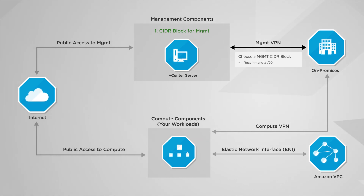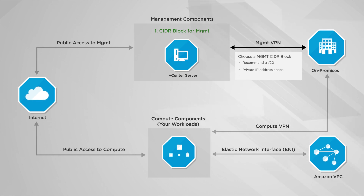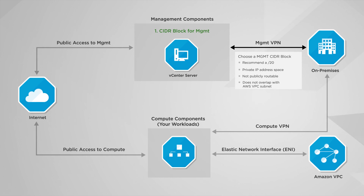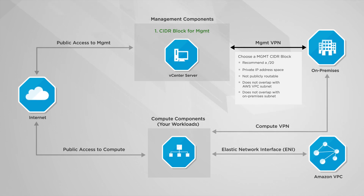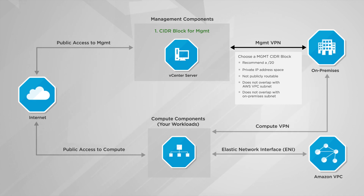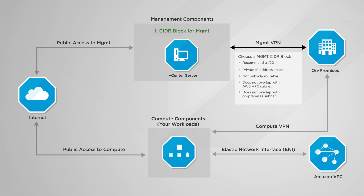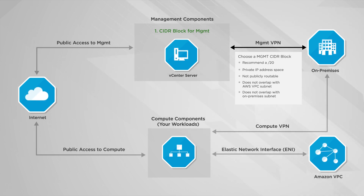There are a few things you should consider when choosing your management CIDR block. Your CIDR range should be a private IP and not publicly routable address space. You must choose a range of IP addresses that does not overlap with the AWS subnet you are connecting to. If you plan to connect your SDDC to your on-premises data center, the IP address range you choose must be different from the ones in your on-premises data center, to avoid IP address conflicts. You can't change your CIDR range without redeploying your SDDC from scratch, so choose and plan carefully.